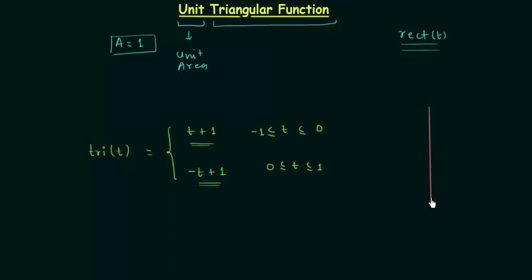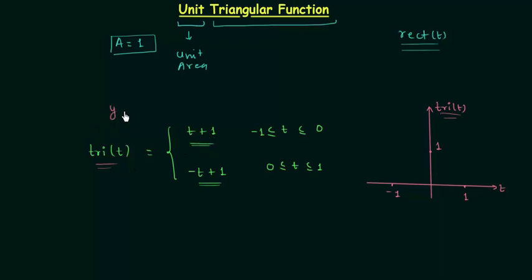The next part of this lecture is the plot of unit triangular function tri(t). We have t equal to minus 1 and t equal to 1, and at the peak point tri(t) is equal to 1. In the first case when tri(t) is equal to t plus 1, we have the equation y equal to mx plus c, in which m the slope is equal to 1 and the intercept c is also equal to 1. When slope is equal to 1, the angle theta is equal to 45 degrees, measured anticlockwise from the x-axis.